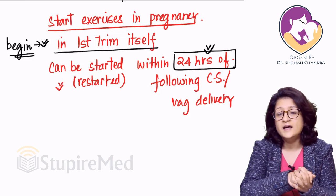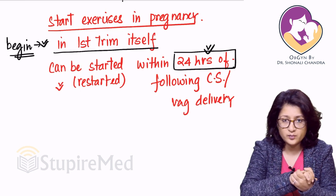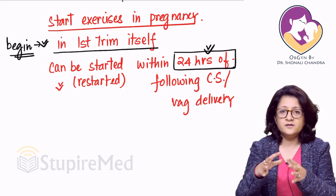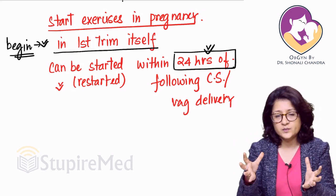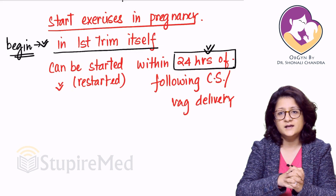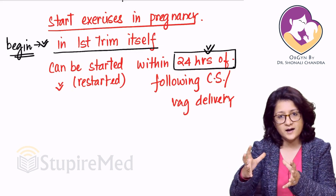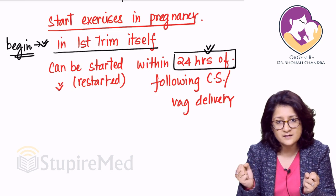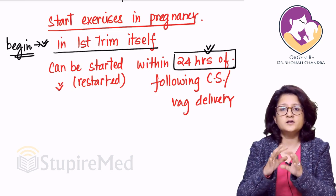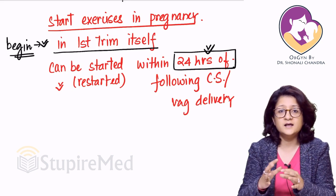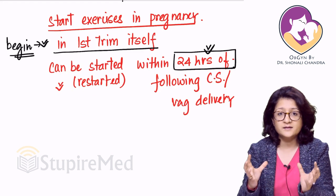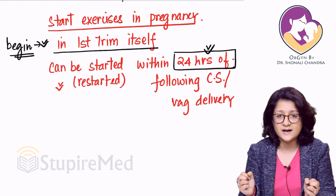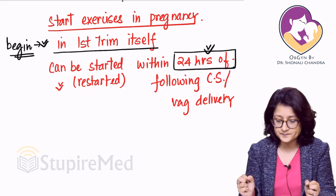It is very important to demonstrate and ascertain that the woman is in fact contracting the right muscles and not using the gluteus or anterior abdominal muscles. So this is about Kegel exercises — very important. Talking about pelvic organ supports: we have talked about the ligaments maintaining the position of the uterus and vagina, and the pelvic diaphragm, which is the prime support.